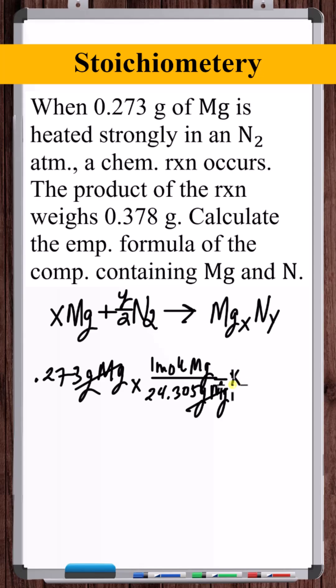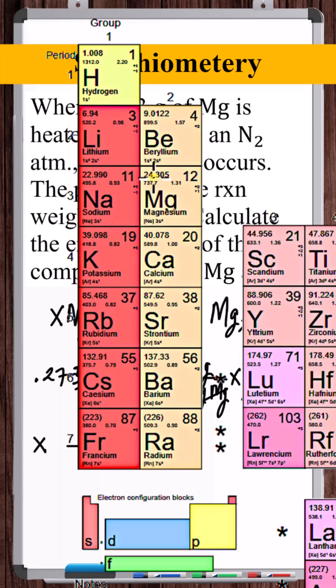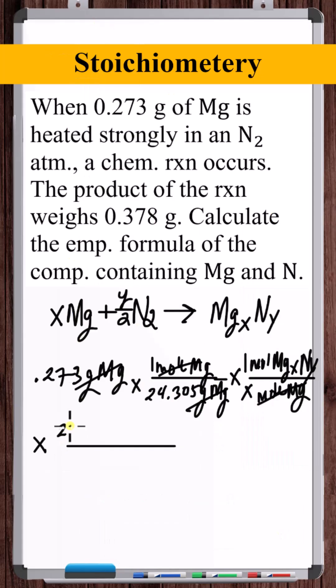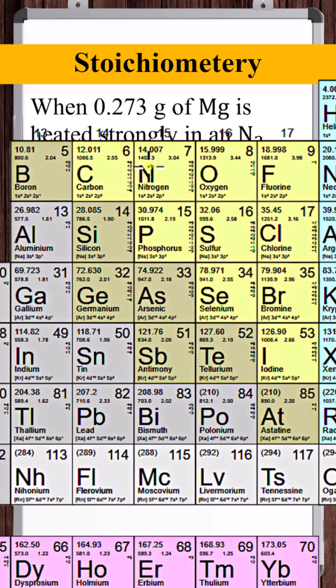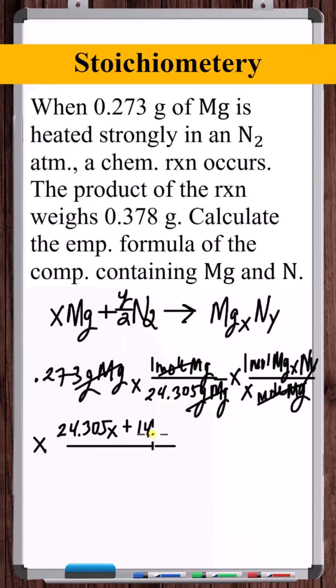Using the stoichiometric equivalency, for every X moles of magnesium consumed, one mole of this MgXNY compound is produced. Now let's convert this to grams of MgXNY. What's the molar mass of MgXNY? The molar mass of magnesium is 24.305, molar mass of nitrogen is 14.007.